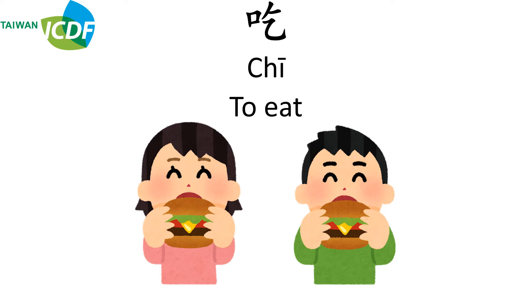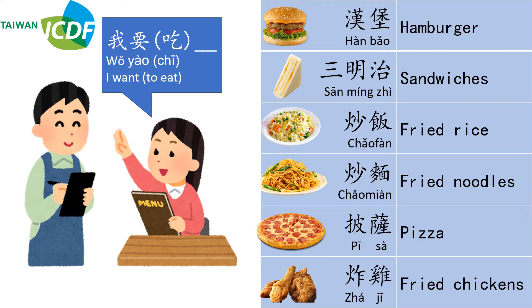我要，吃. Now let's combine 我要 with 吃 together: 我要吃. Of course, you can also say just 我要, but combining them gives you a complete ordering phrase.